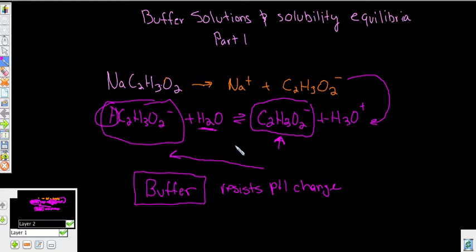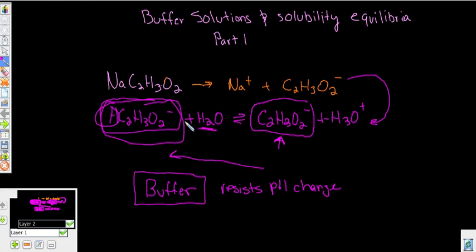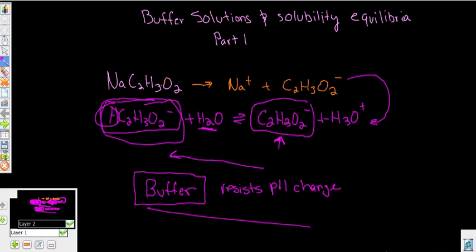If you add a base, the acetic acid releases its hydrogen, which combines with the hydroxide to produce water. So it doesn't matter if you add a little acid or a little base — the buffer stabilizes it. You have excess weak acid ready to donate hydrogens to any hydroxides, and acetate ions floating around as a weak base. What you need for a buffer is simply a weak acid and its conjugate base, using the common ion effect.